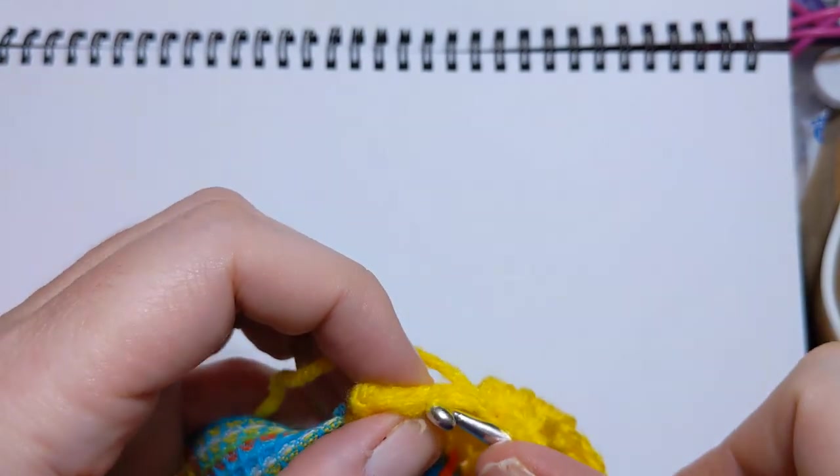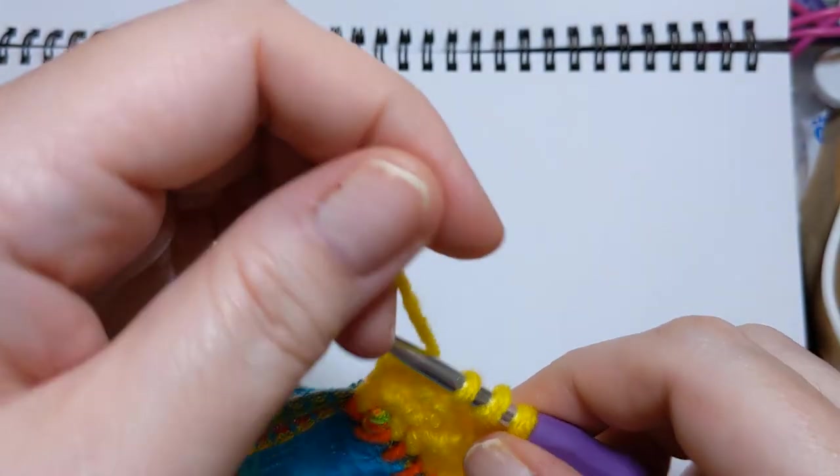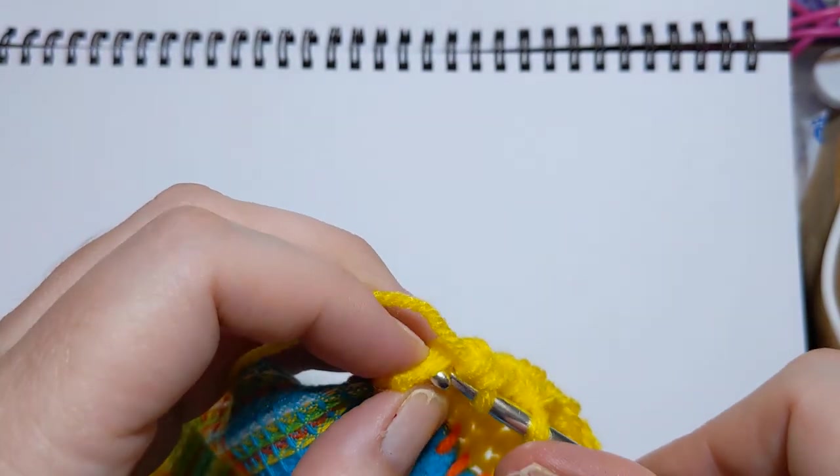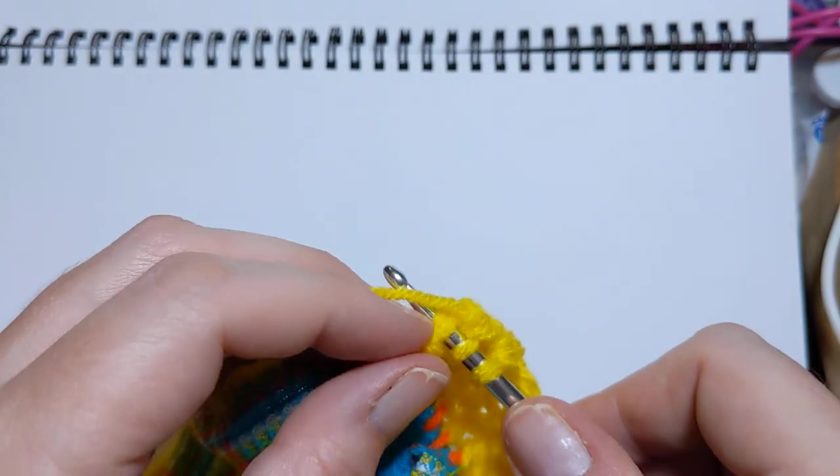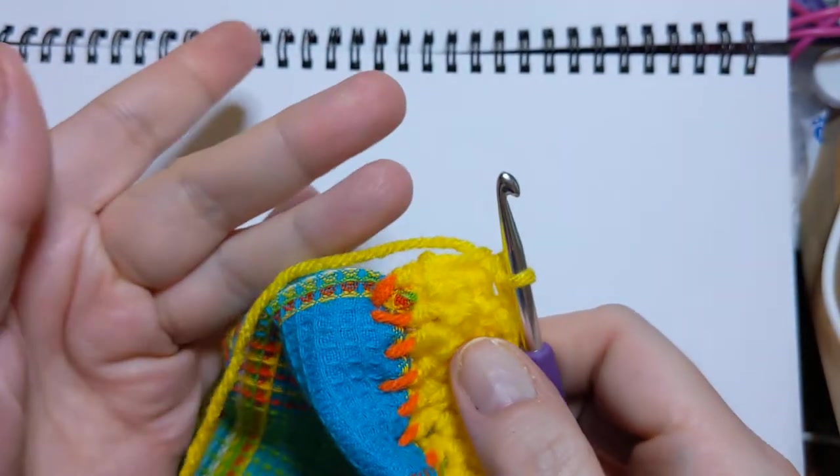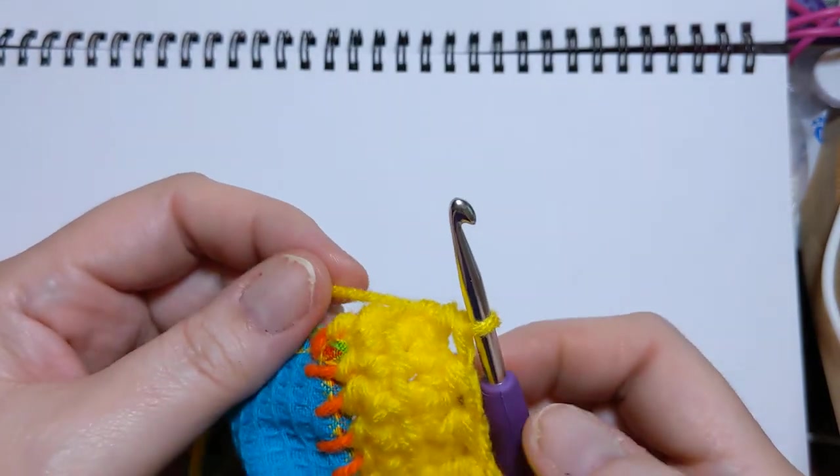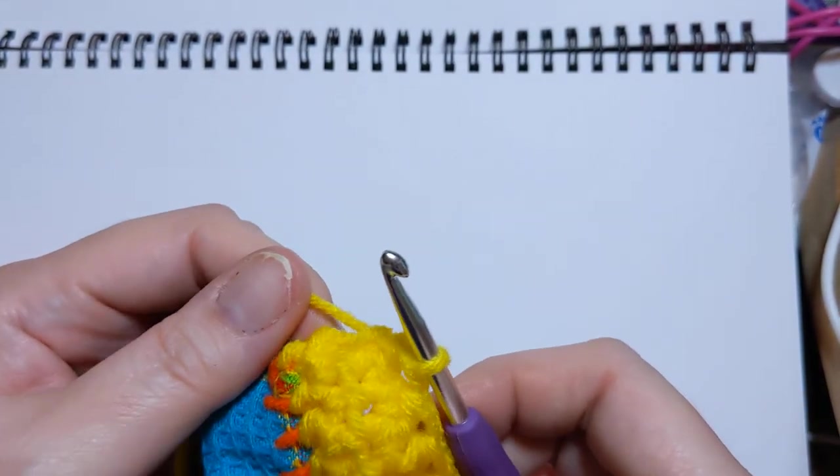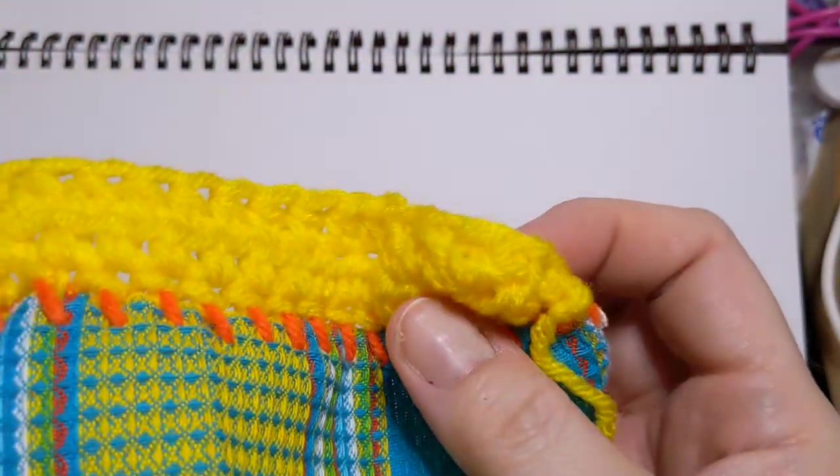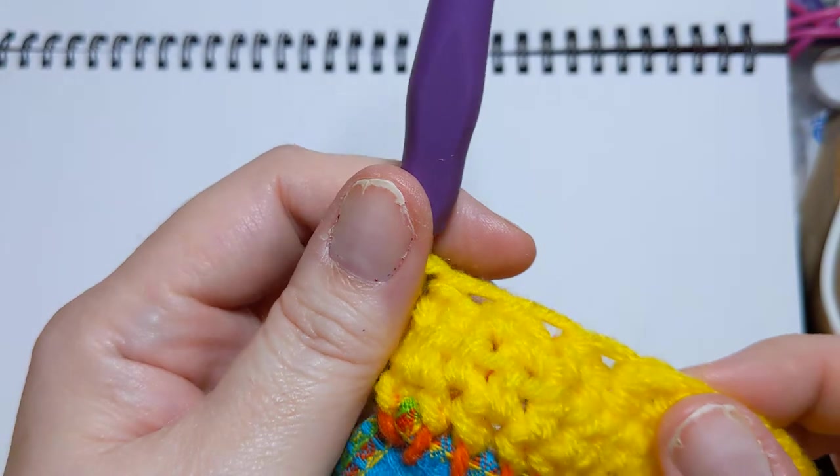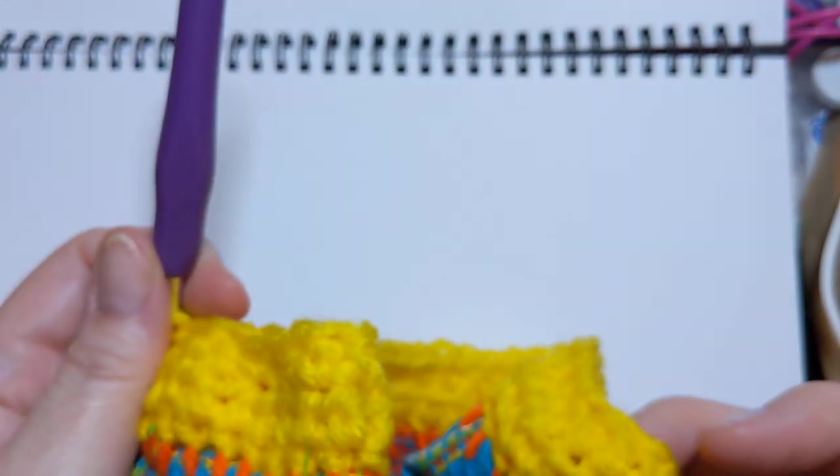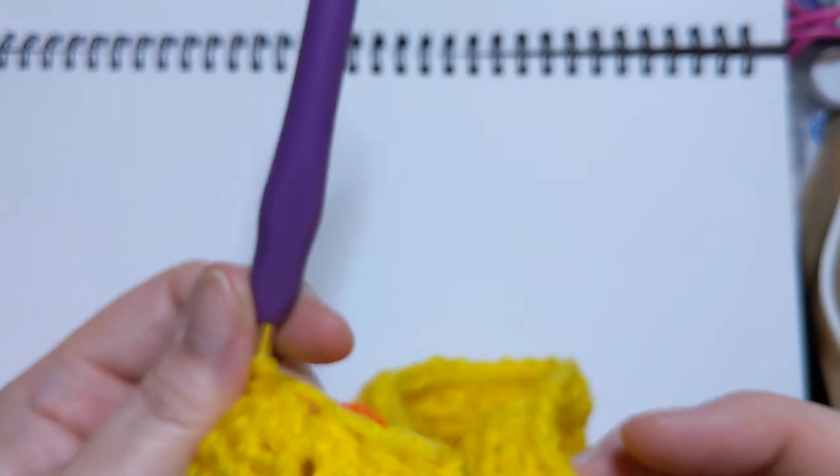Yarn over. Go into that first stitch. Pull up a loop. Yarn over. Pull through two. Go into your last stitch in the row. Pull up a loop. Yarn over. And pull through three. After much consternation, I have managed to finish this row. Good gravy. Let's see what we have here. Notice it is starting to curl under on both of these sides. And that is the only row where we're doing three decreases on each side, just to give it a good head start and boost.